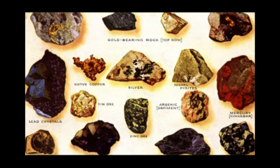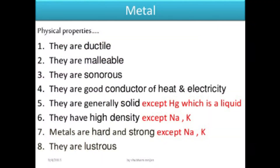Let us now learn the physical properties of metals. First property: generally, metals are solid at room temperature, except mercury. Mercury is a liquid at room temperature — it is a liquid metal. The second property is hardness, which we also call rigidity. Generally, all metals are rigid or very hard.